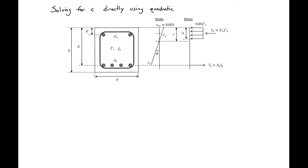In doubly reinforced sections, we can also solve for C directly using a quadratic. To do this, we'll start with equilibrium. We'll start with our tension equal to compression.